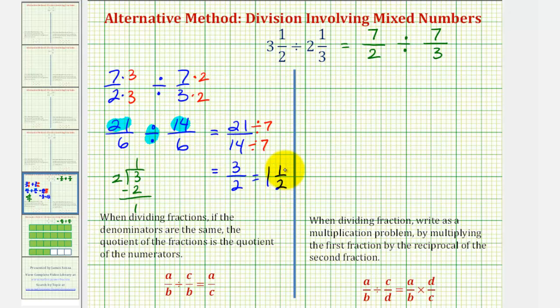This means there is one and one-half 14-sixths in 21-sixths, or going back to the original problem, there is one and a half two and one-thirds in three and a half.